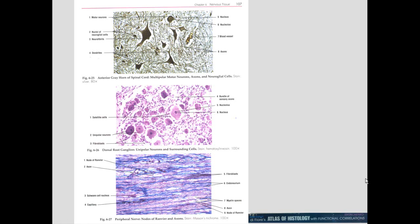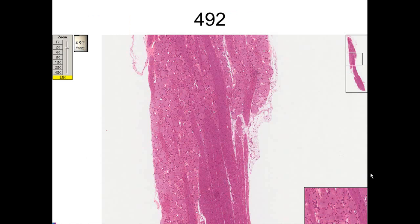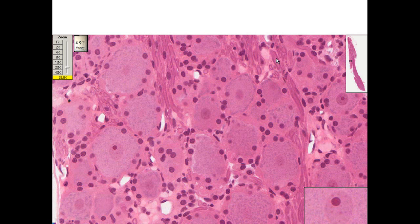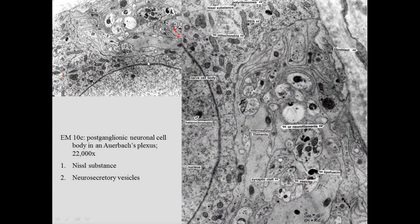Today we'll be talking about the peripheral nerve, but we will also be talking about some ganglion cells. Here on slide 492 we see nerve cell bodies — you can see the nerve cell bodies and myelinated axons running through here. You can see the myelin on either side, these are the cell bodies, and you can see the nucleus, the Nissl substance, and the support cells around it.